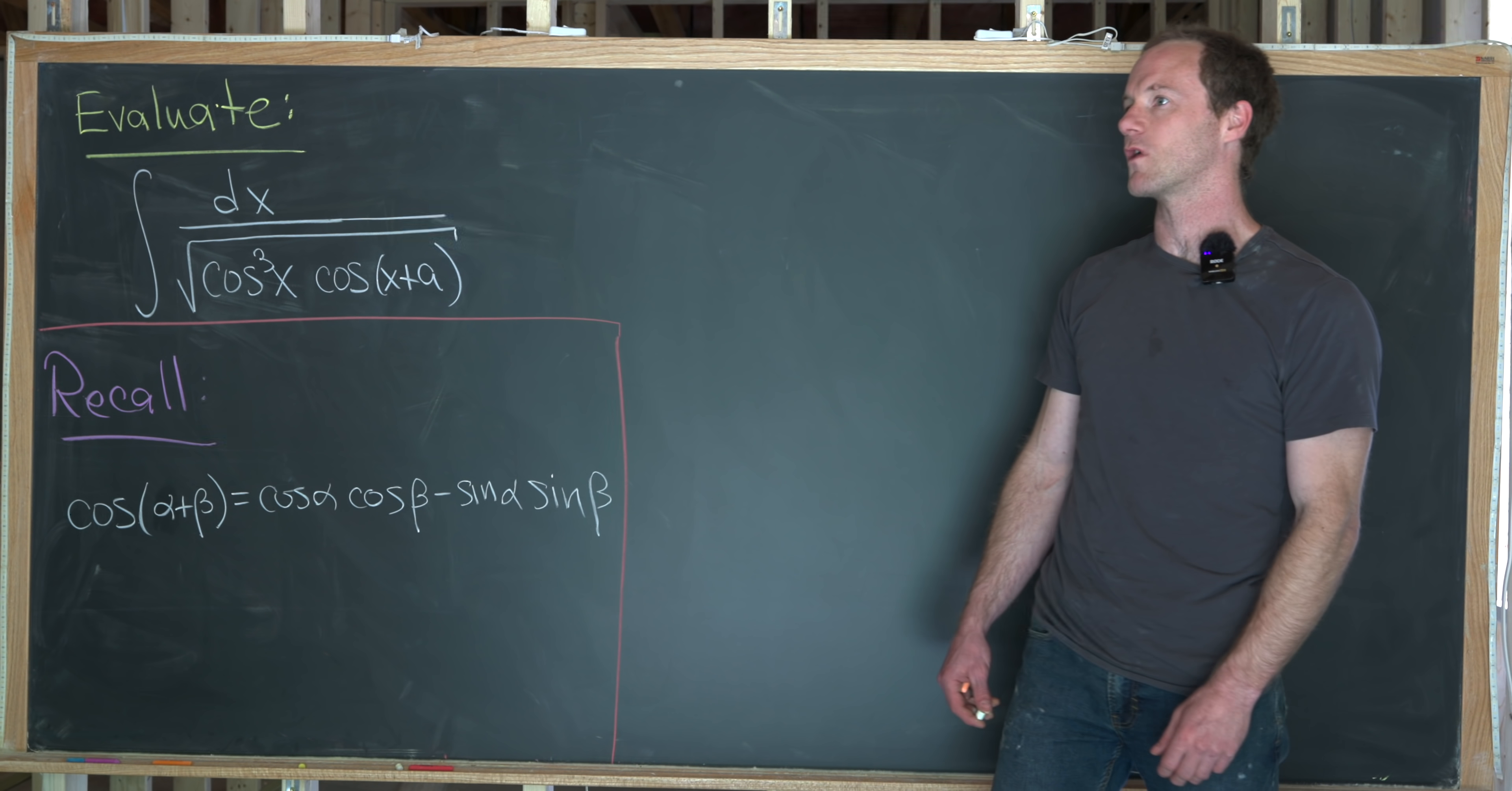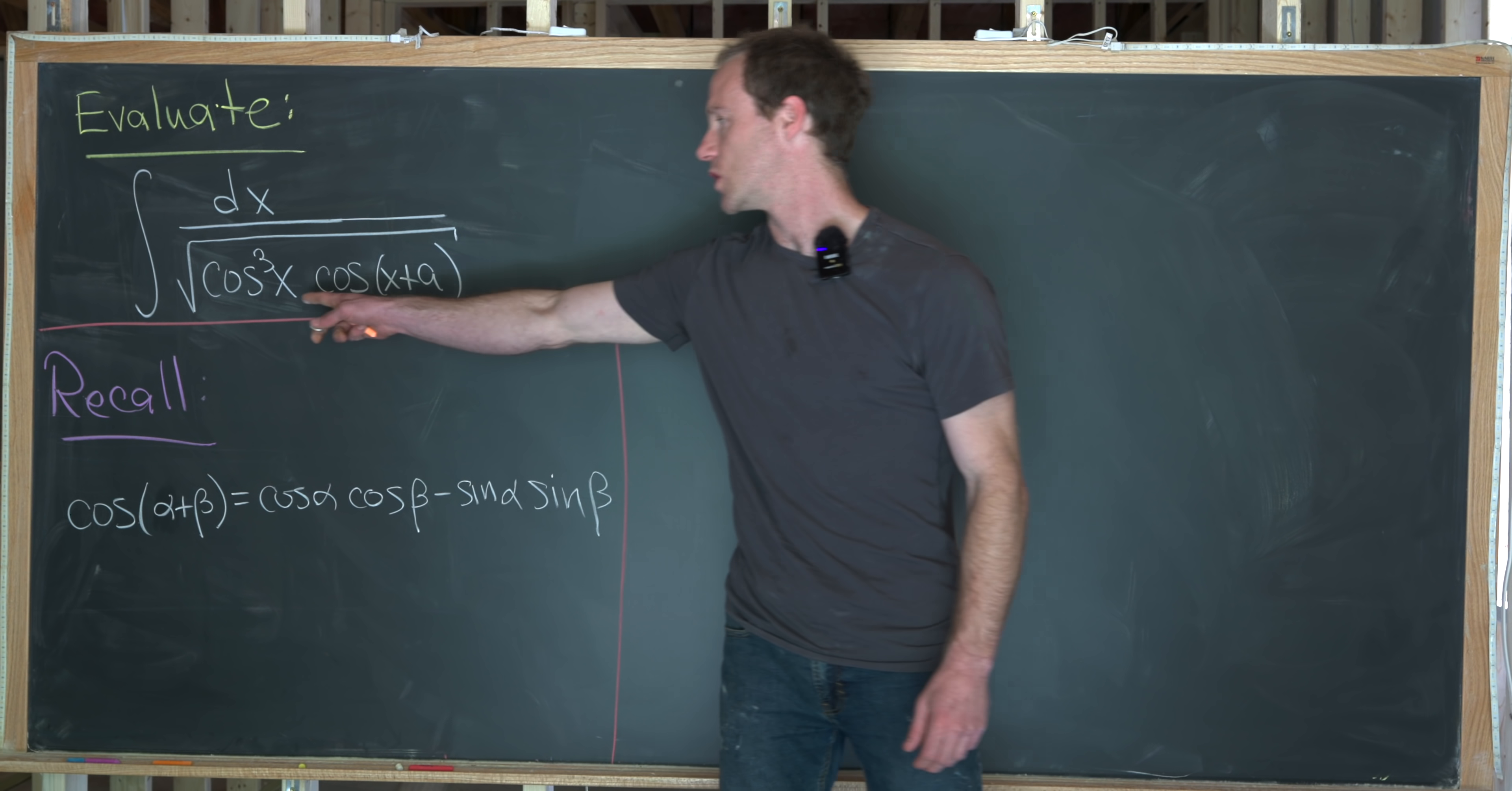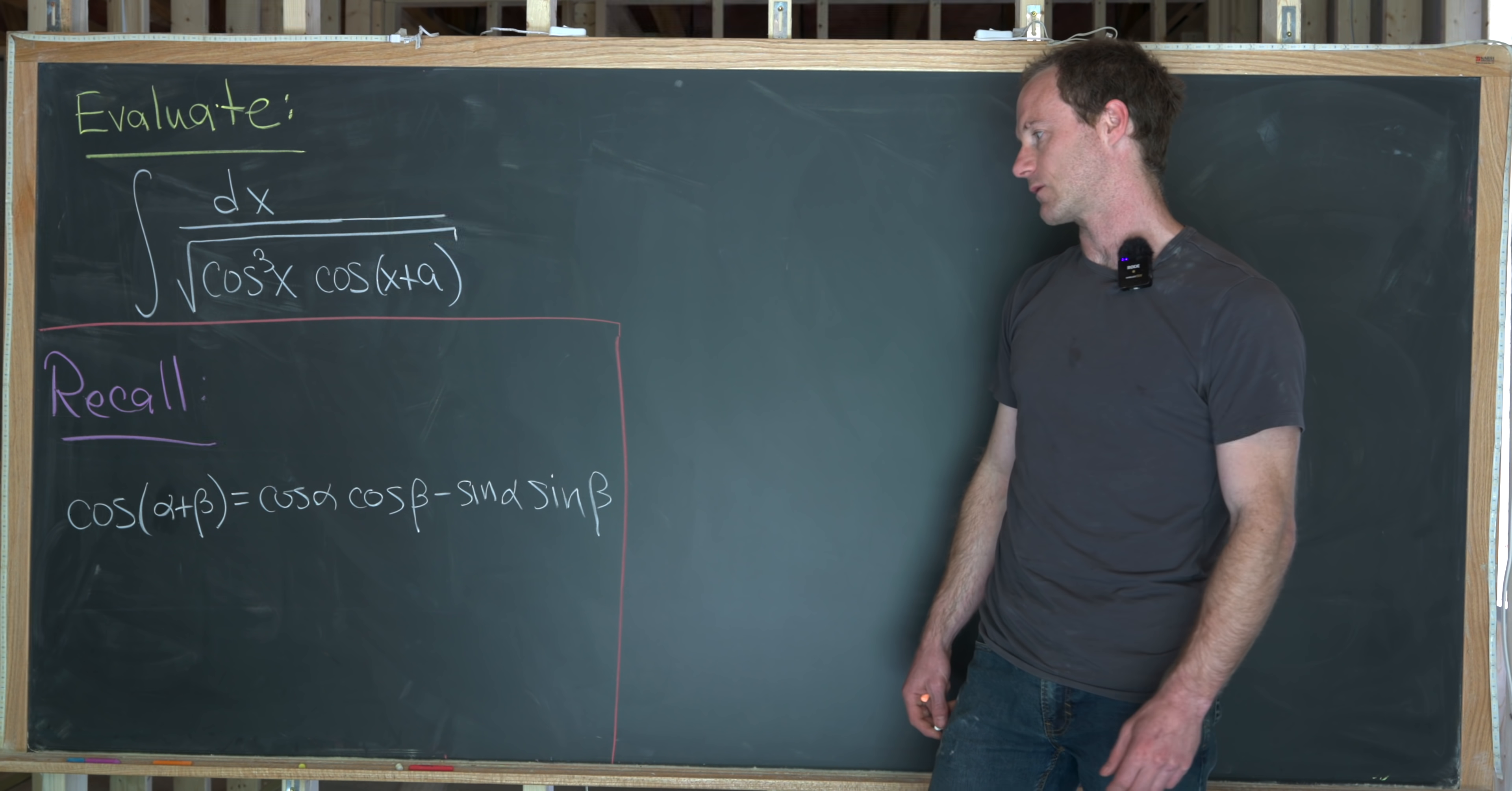Let's maybe try and prove him wrong by getting a lot of views on this video. So what do we want to do? We're calculating an indefinite integral, in other words, an antiderivative. The function is one over the square root of cosine cubed times cosine of x plus a. This fact that we've got a sum inside of the cosine means we're probably going to want to use the sum angle formula for cosine. So let's recall that real quick.